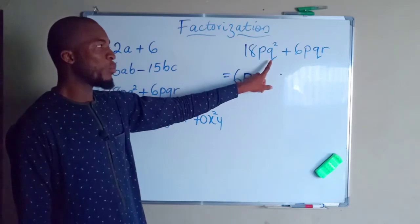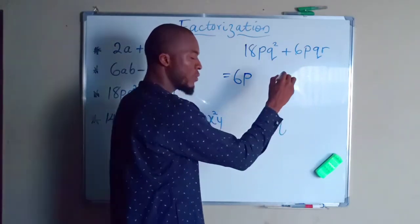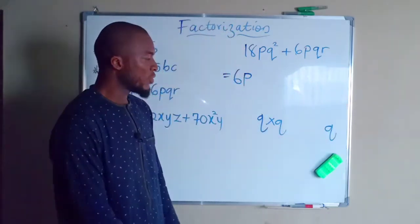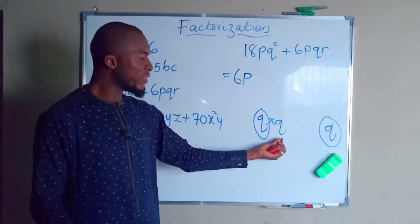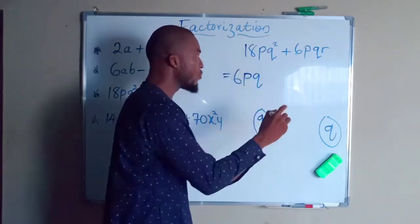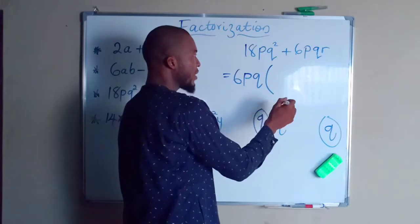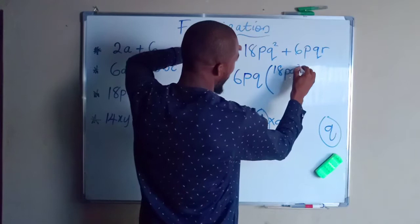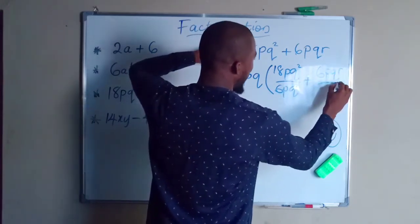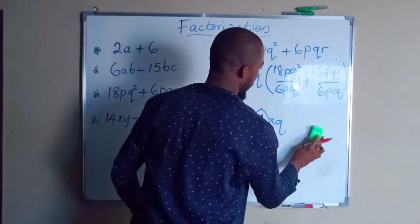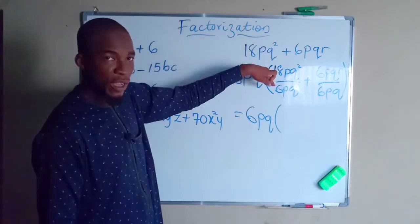We have q in both terms: the first term has q squared, which means q times q, and the second term has a single q. So q times q divided by q leaves a single q as the common factor. We have r in the second term but not in the first, so we leave r out of the common factor. The common factor is therefore 6pq. In the bracket we write 18pq² divided by 6pq, plus 6pqr divided by 6pq.